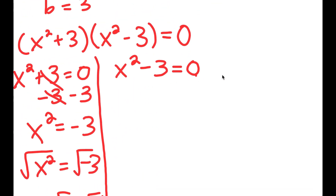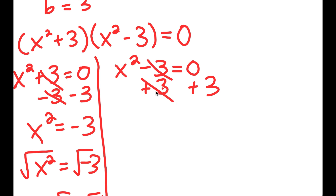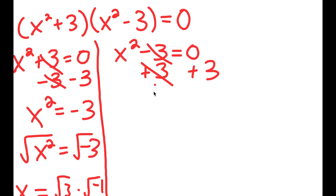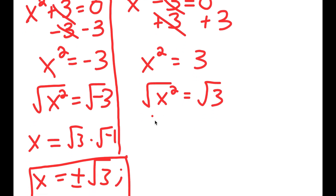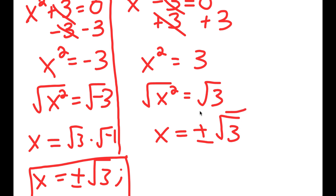For the second equation, x squared minus 3 equals 0, which is simpler. Adding 3 to both sides gives x squared equals 3. Taking the square root of both sides, I get x equals positive or negative square root of 3.